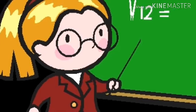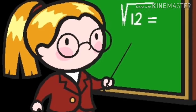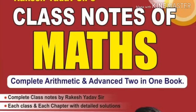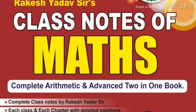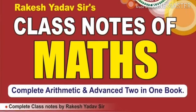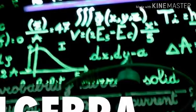10th Question: Verify the Rolle's theorem f of x equal x square minus 5x plus 6 in interval closed interval 2, 3. That's the very short answers question practice.